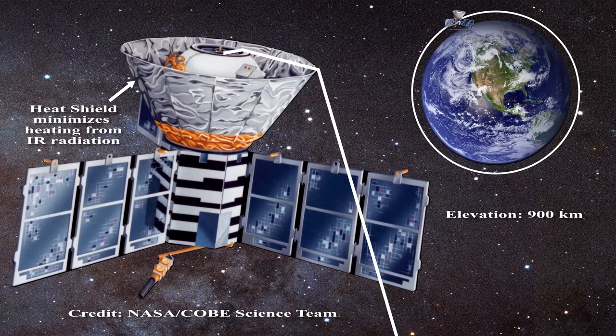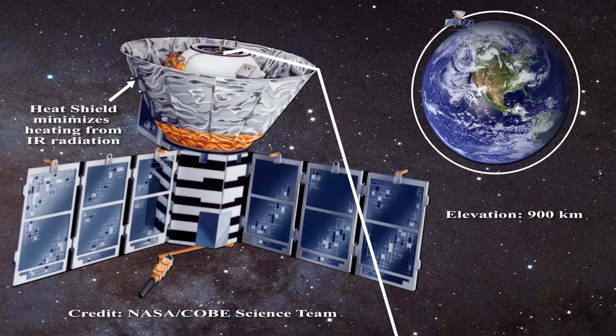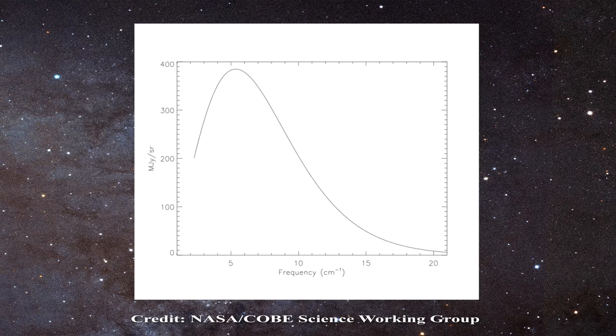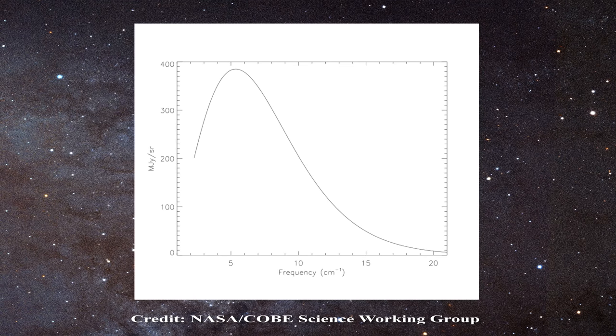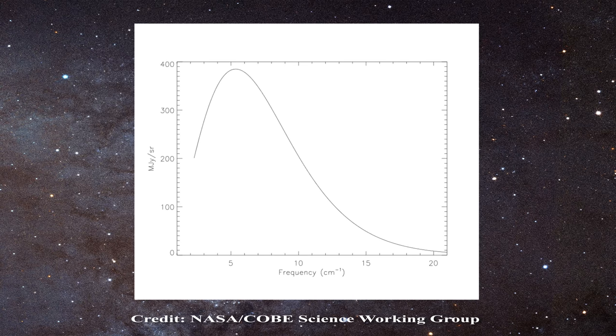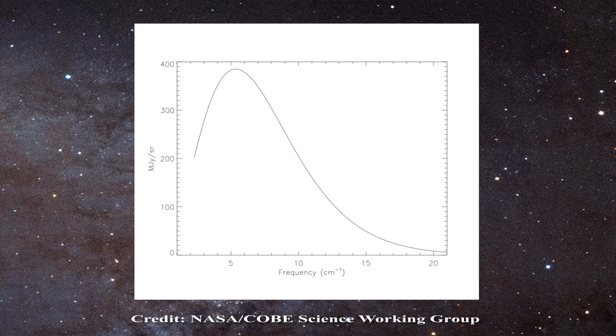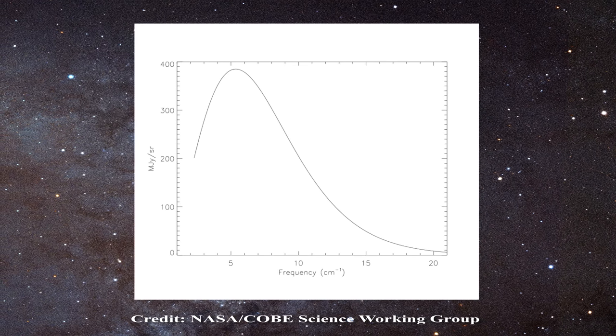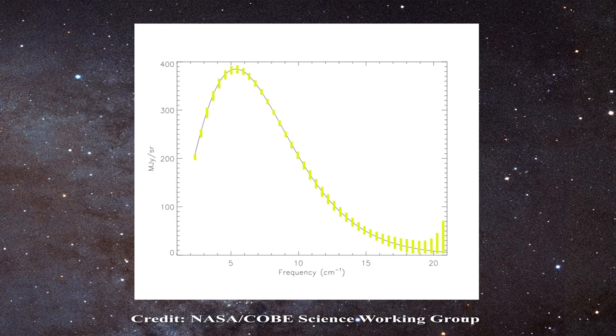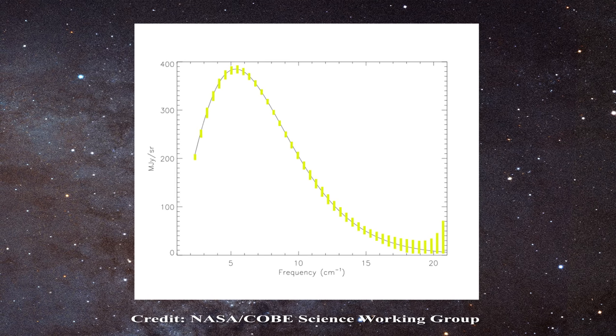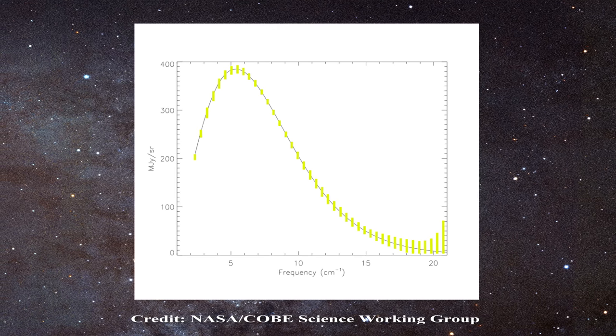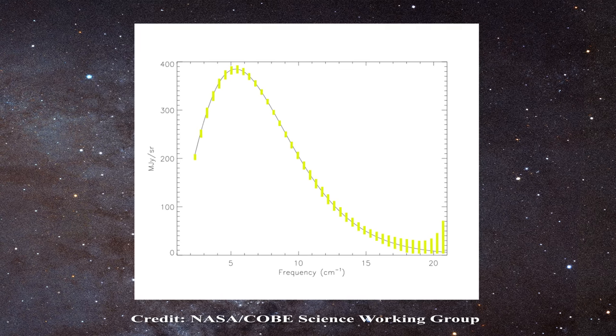FIRAS was famous for having obtained the best black body radiation curve ever as you can see in this figure. Stephen Hawking stated that this represented the discovery of the century if not of all time. Indeed the COBE authors are proud to claim that their measurements had such high signal to noise that one had to blow up the error bars by a factor of 400 just to be able to visualize them. Now that is signal to noise. In fact it is nearly unparalleled signal to noise for such measurements.